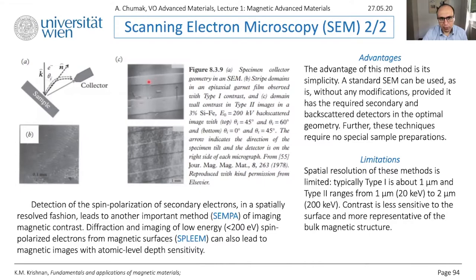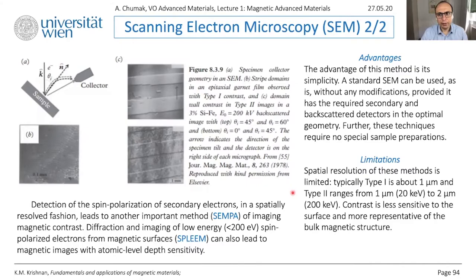Here you can see the domain — that is how it looks like. One millimeter scale — so it's a large scale. The resolution of this technique is not so good, since you have to collect a lot of information to analyze, and it doesn't give you a highly resolved picture. If you want to increase resolution, you use SEMPA — secondary electron microscopy with polarization analysis.